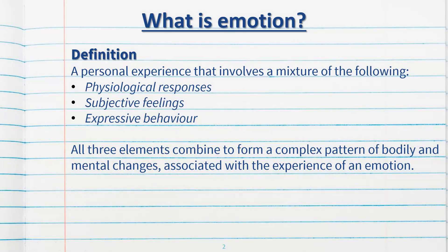What is emotion? The definition that you all need to remember is the following: a personal experience that involves a mixture of physiological responses, subjective feelings, and expressive behaviours. All three elements need to combine to form a complex pattern of bodily and mental changes associated with the experience of an emotion. All three of these elements need to be present in order for it to be considered an emotion in psychology.